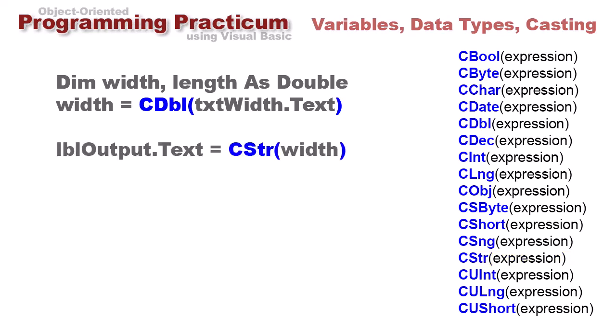If I wanted to put the width value which is numeric back into the text property label, I could say lbl output dot text equals c str of width. However, there's a more common way to do that, and that is to use the ToString method. There's a ToString method associated with every single class that converts the class to some sort of string.